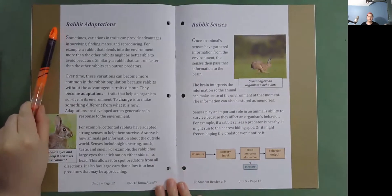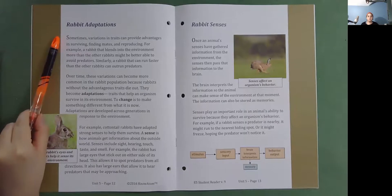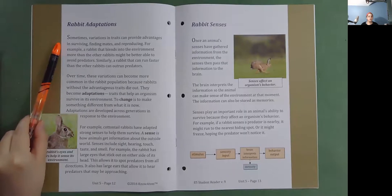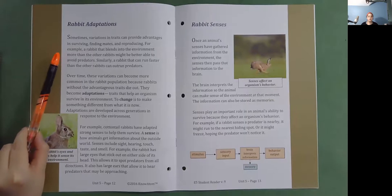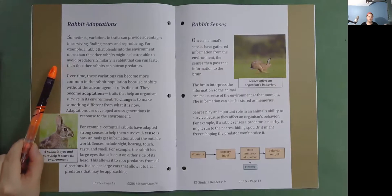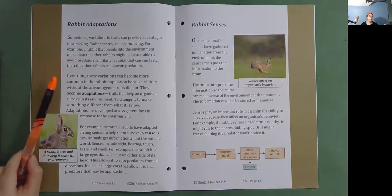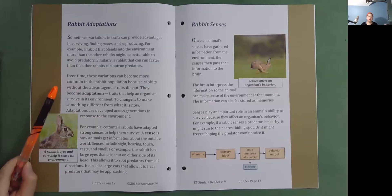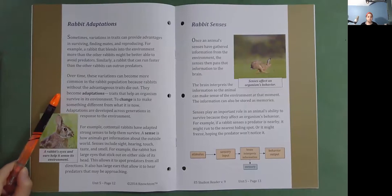Rabbit Adaptations. Sometimes variations and traits can provide advantages in surviving, finding mates, and reproducing. For example, a rabbit that blends into the environment more than the other rabbits might be better able to avoid predators. Similarly, a rabbit that can run faster than the other rabbits can outrun predators. Over time, these variations can become more common in the rabbit population because rabbits without the advantageous traits die out. They become adaptations, traits that help an organism survive in its environment.